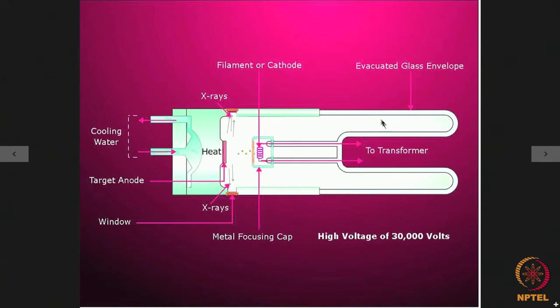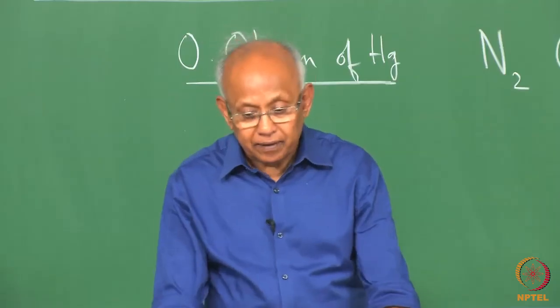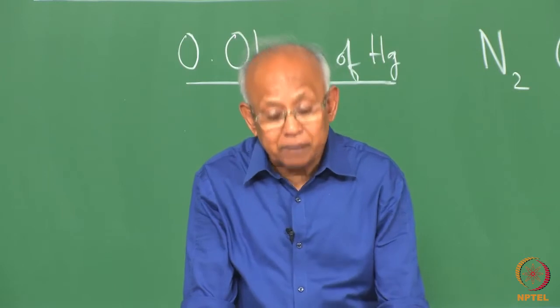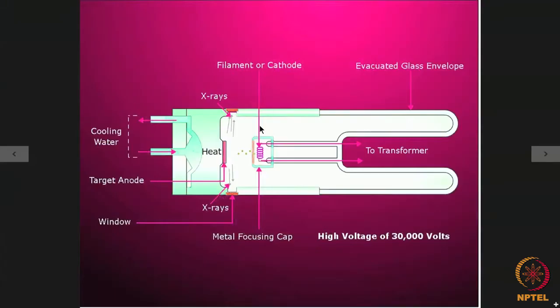The entire tube here is an evacuated glass envelope. The level of evacuation is pretty high. These windows through which the x-rays are let out are made up of low atomic number material such as aluminum, beryllium or even mica. This target gets heated up due to the impact of the striking electrons and there must be a method by which this can be cooled down by passing cooling water to the system.